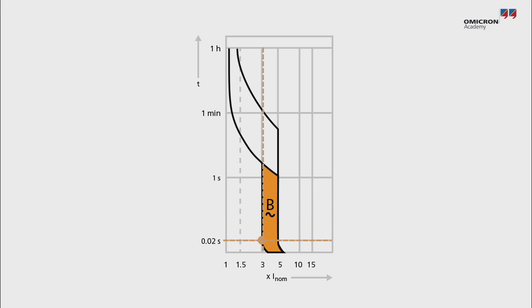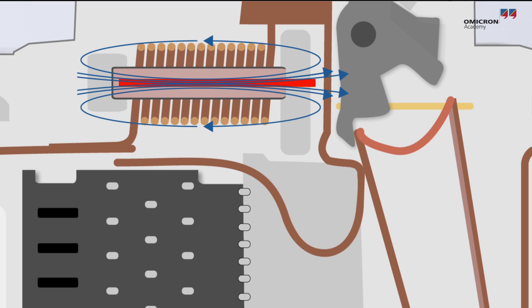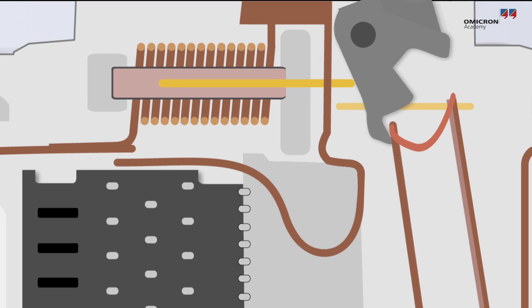An MCB must open a circuit instantaneously when it encounters a short circuit at several times the nominal current. A solenoid and a piston are the elements used for instantaneous tripping. A short circuit creates an instant magnetic field that moves the piston and operates the breaker.